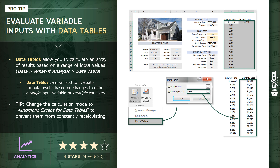Rather than manually testing 15 or so different interest rate values and recording the results, or typing a formula 15 times, we've configured the data table tool one time and produced all of the results with the click of a button. Data tables can be used to evaluate results based on changes to either a single input variable, like we've shown with interest rate, or with multiple variables, in which case we'd also plug in a row input cell. I'm going to show you an example of both as soon as we jump into Excel.